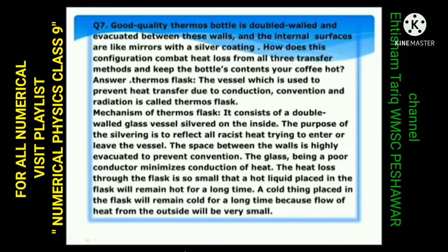Answer: Thermos flask — the vessel used to prevent heat transfer due to conduction, convection, and radiation is called a thermos flask. Mechanism: It consists of a double-wall glass vessel silvered on the inside. The purpose of the silvering is to reflect all radiant heat trying to enter or leave the vessel. The space between the walls is highly evacuated to prevent convection. The glass being a poor conductor minimizes conduction of heat. Thus a hot liquid placed in the flask will remain hot for a long time, and a cold thing will remain cold for a long time.